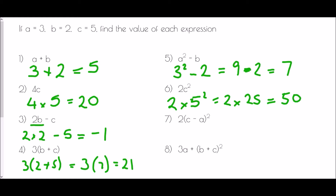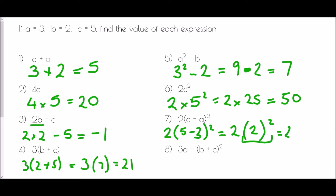In number 7, we're bringing together brackets and indices. We replace each letter with its number. Inside the brackets we have c take away a: 5 take away 3 is 2. That result is squared, and BIDMAS tells us indices come next. So 2 squared is 4, and 2 times 4 is 8.